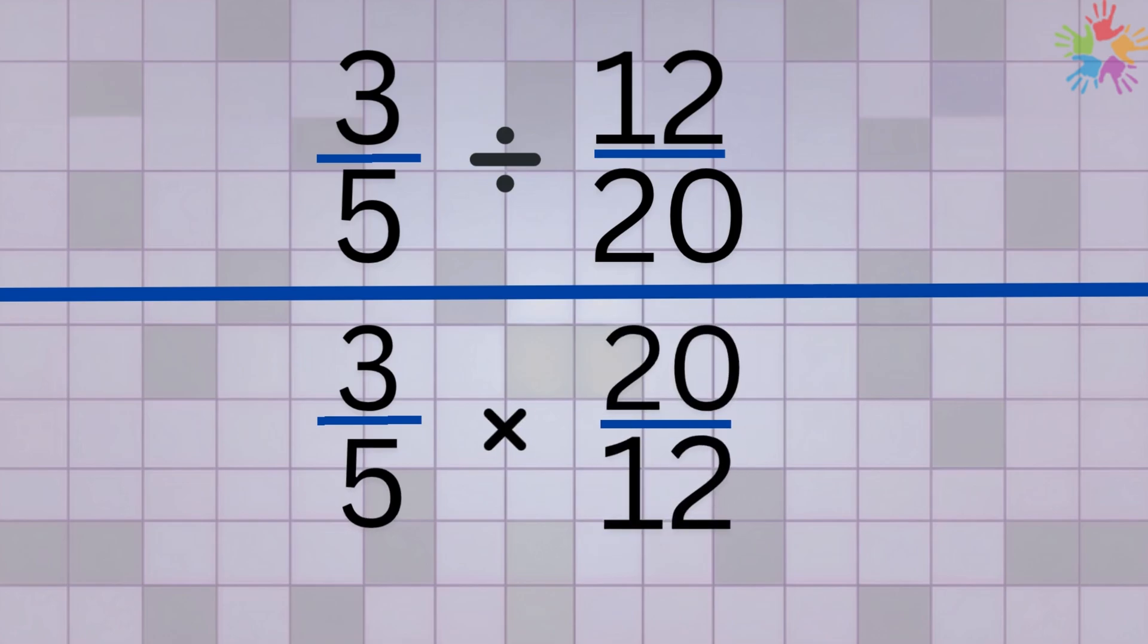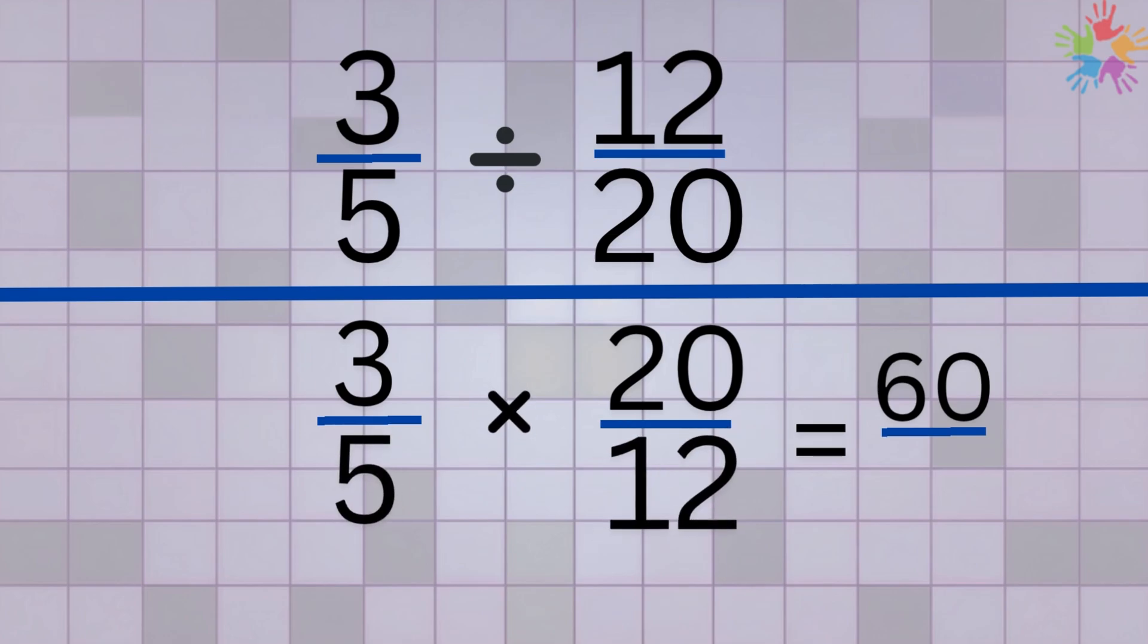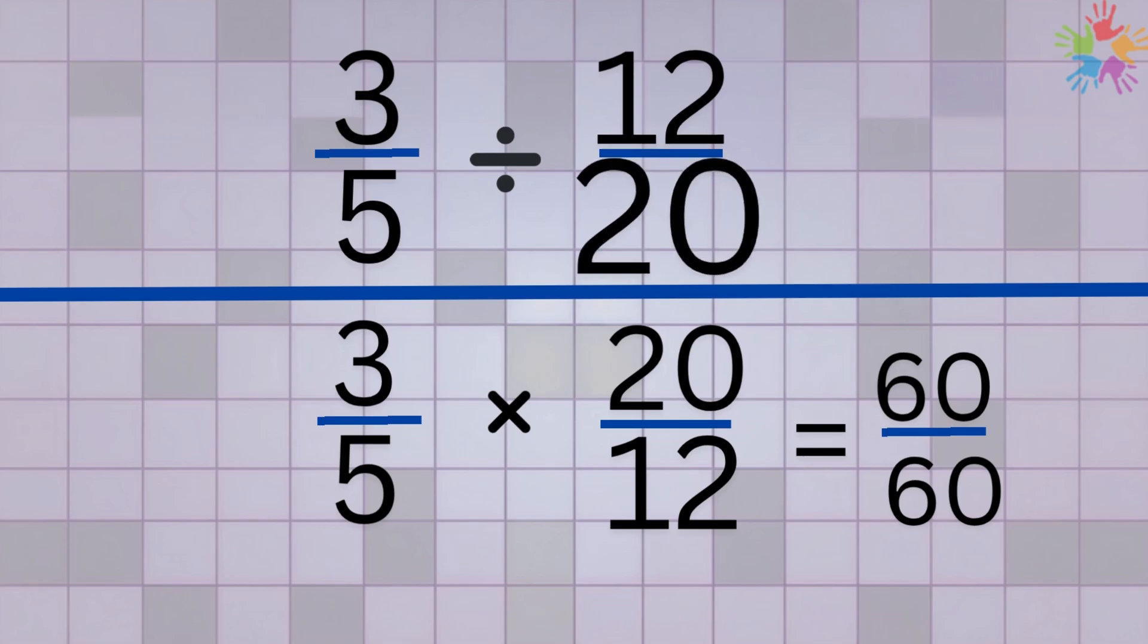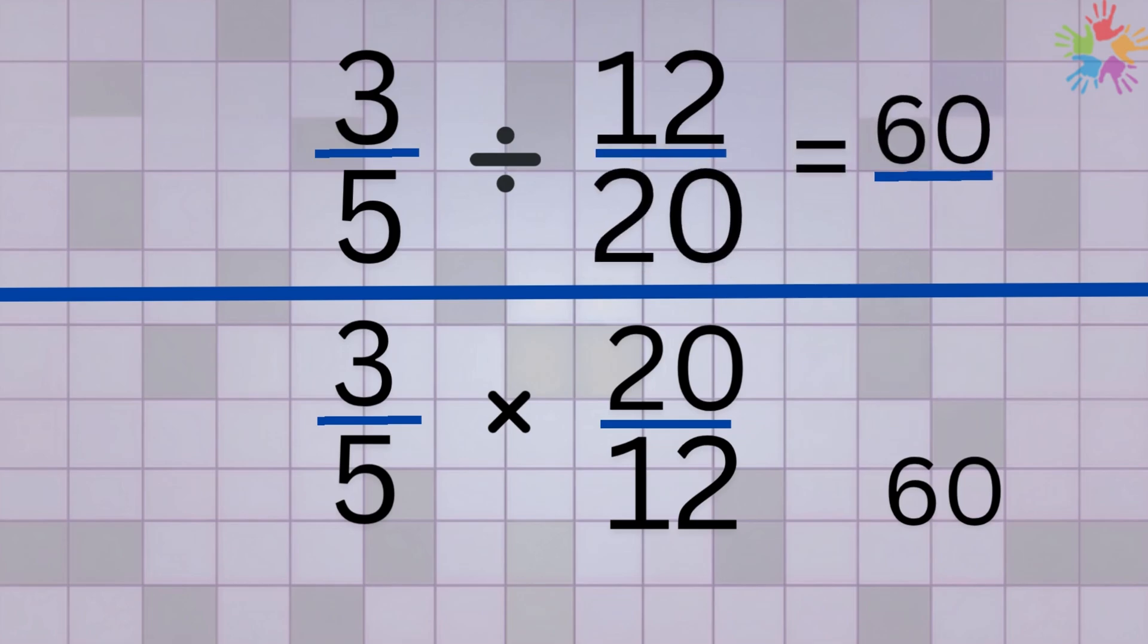Next, multiply the numerators: 3 times 20 equals 60. Then multiply the denominators: 5 times 12 equals 60. So 3 over 5 divided by 12 over 20 equals 60 over 60. And what is 60 over 60? It's just 1, because the top and bottom are the same.